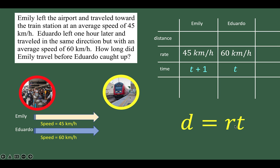It is easier to use addition than subtraction, so the first representation is better. Now, distance equals rate times time. We know the rate and we have expressions for the time, so we can write the distance expressions. For Emily's distance, that's 45 times the quantity t plus 1. For Eduardo's distance, that's 60 times t. And we have just completed the table.